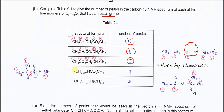For the fourth isomer, the two CH3 groups are equivalent, giving one peak. Then this carbon gives one peak, this carbon another, and another — so total is 1, 2, 3, 4: only 4 peaks. For the fifth isomer, the two CH3 groups are also equivalent, giving one peak, so you again get 1, 2, 3, 4 — only 4 peaks.